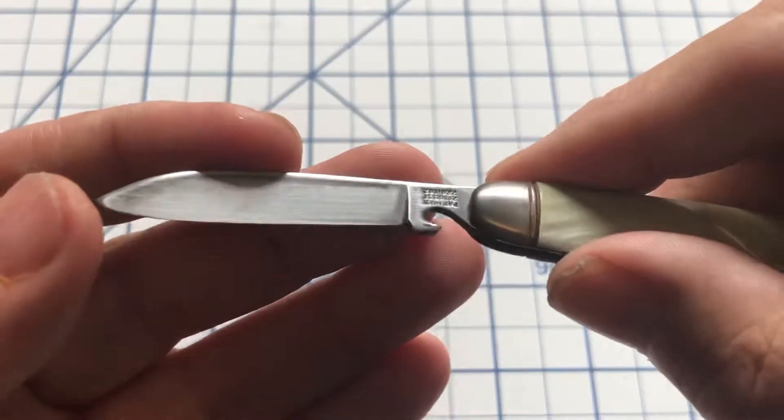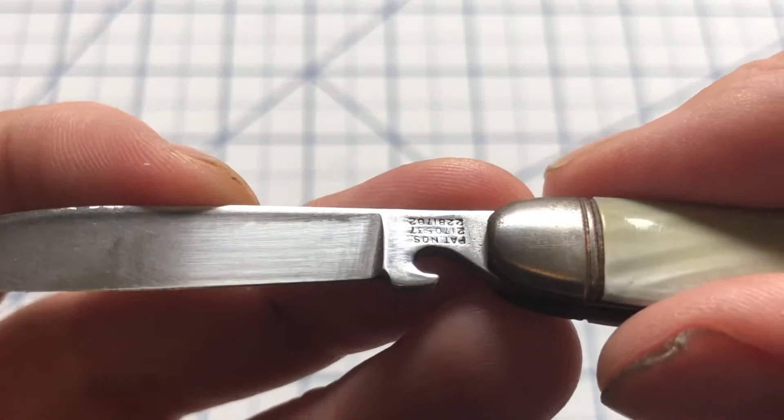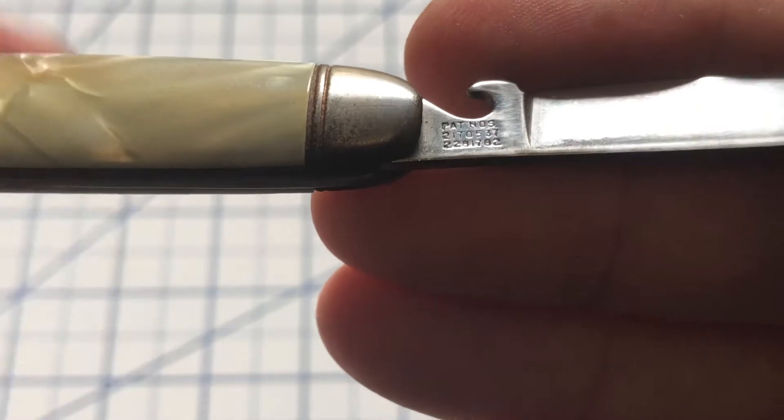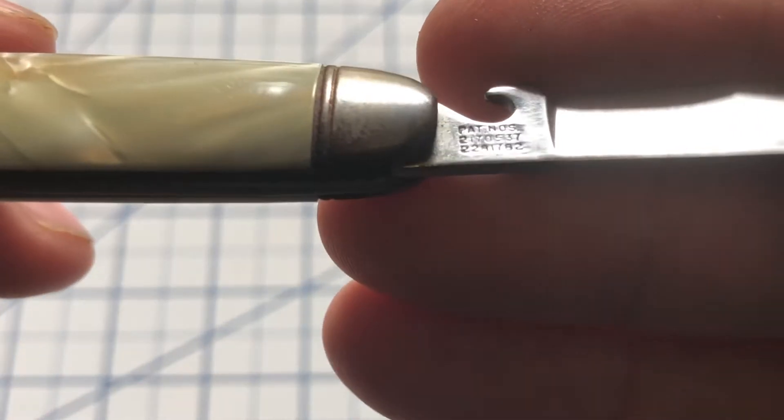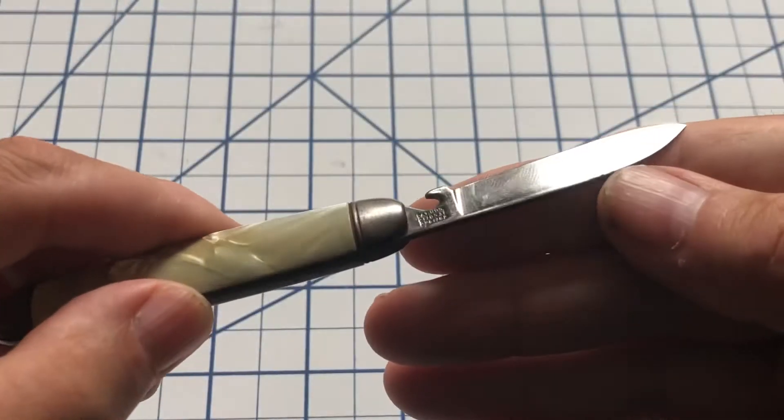Now, as I said, this is an unbranded knife. You can see there's no brand on it. But it does have the patent numbers. These patent numbers were issued to Imperial Knife Company. The top one was issued in 1939, the bottom one in 1942. So this knife is at least 1942.